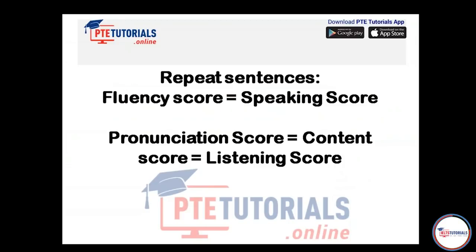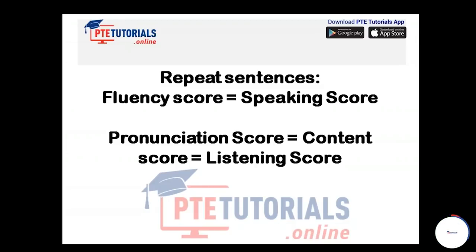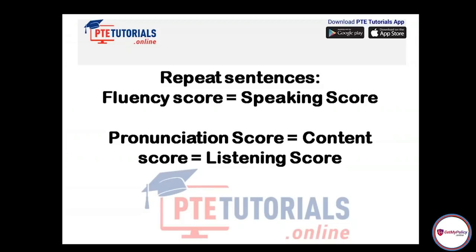Next: repeat sentences — your second task of the speaking module. In repeat sentences, again fluency, pronunciation, and content come into play. Fluency score is added to your speaking. Pronunciation score equals your content score, and on the basis of content score you get your listening score. For fluency you get five marks, for pronunciation five marks, and for content you get three marks from each and every repeat sentence.